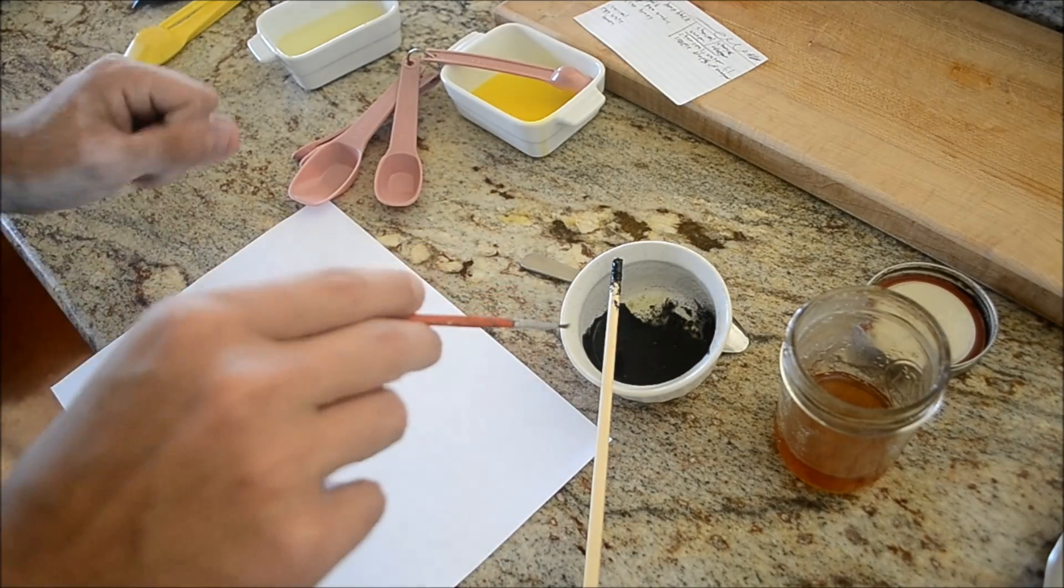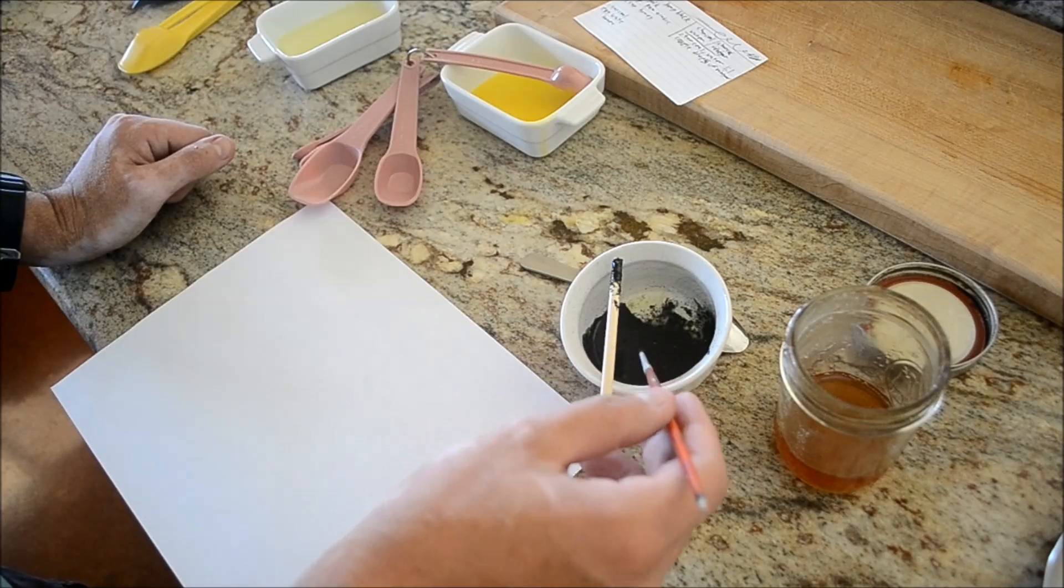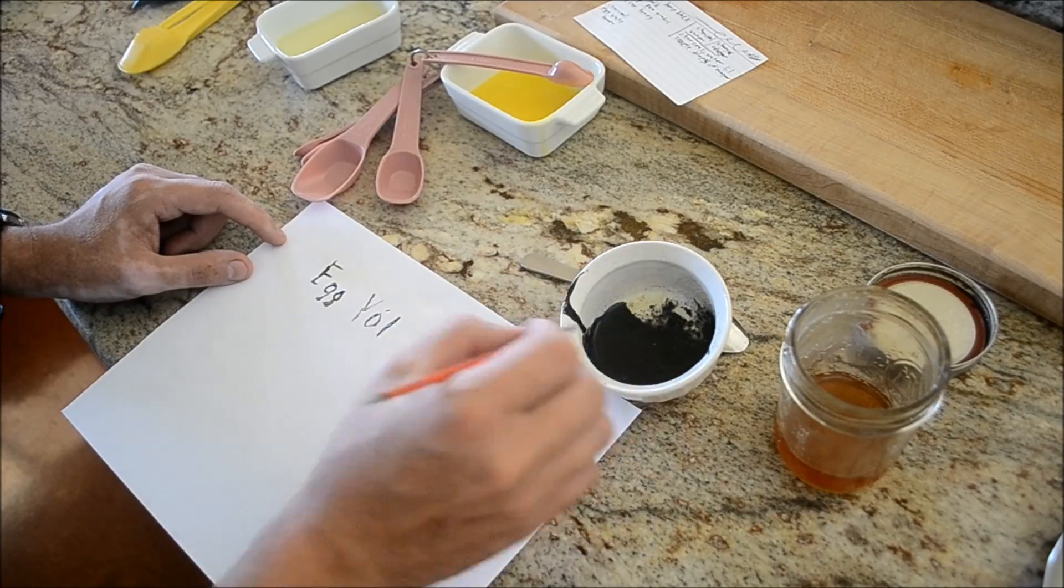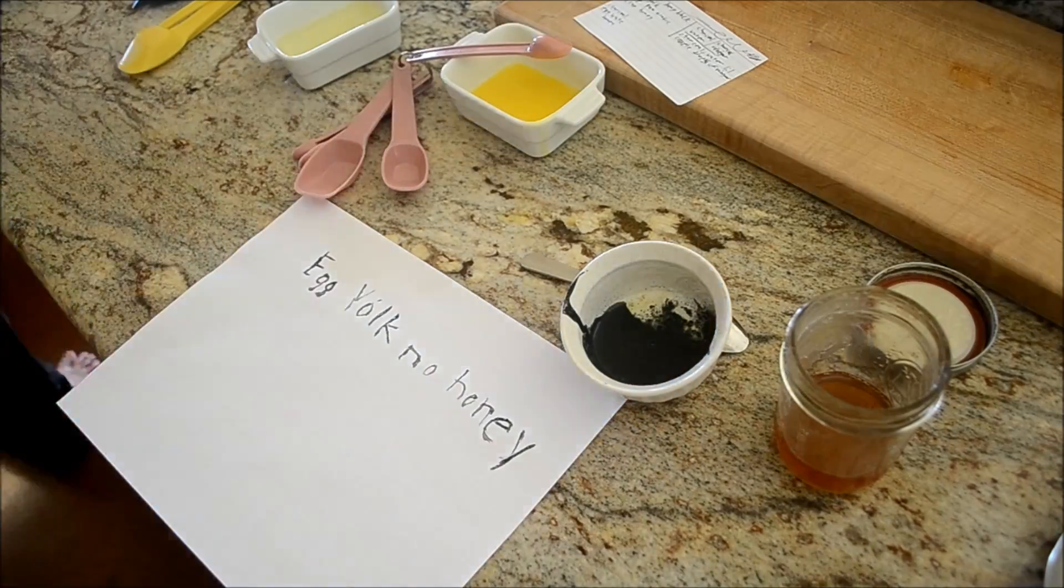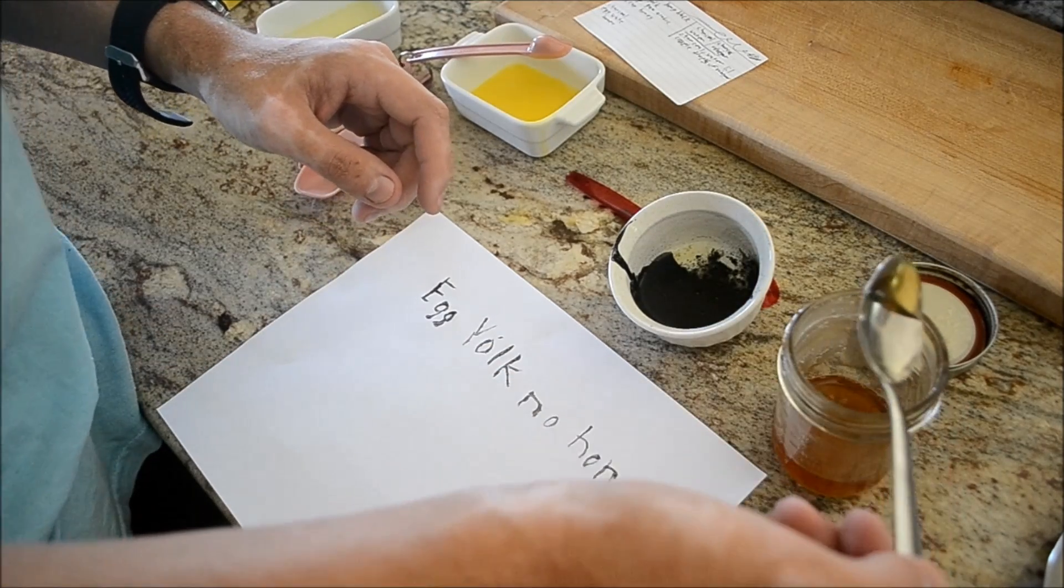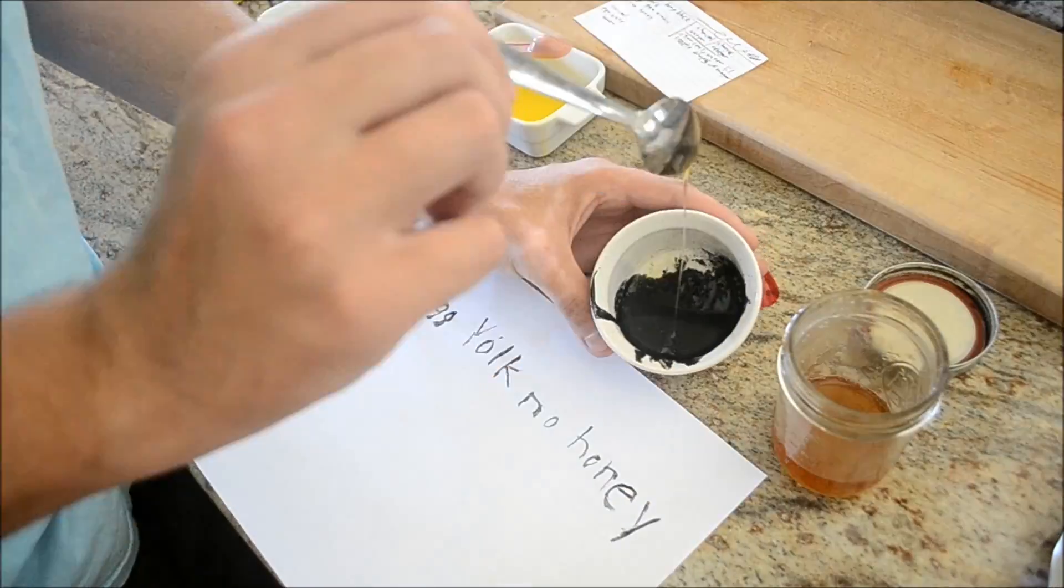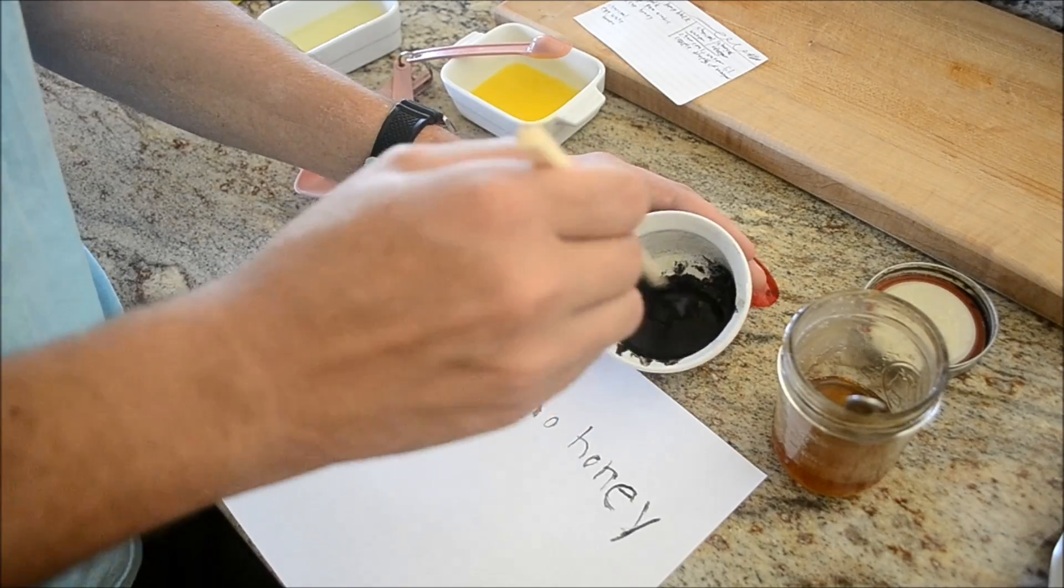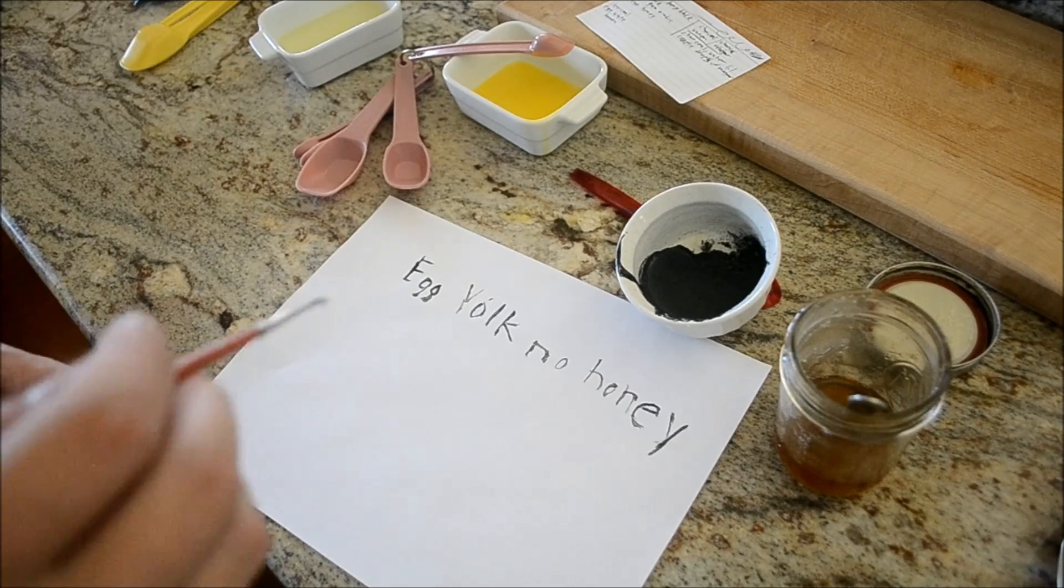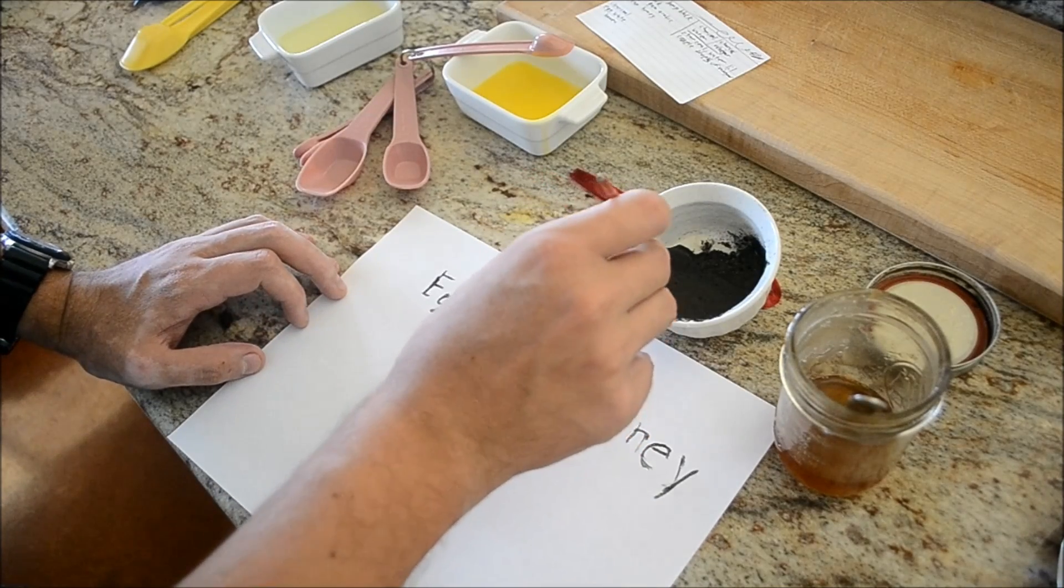So I've mixed up the egg yolk and the charcoal. I've got a pretty good consistency here, I think. I'm just going to try it out. I'm going to add a little bit of honey and see how it thickens it up. So here's the egg yolk, honey and charcoal mixture.